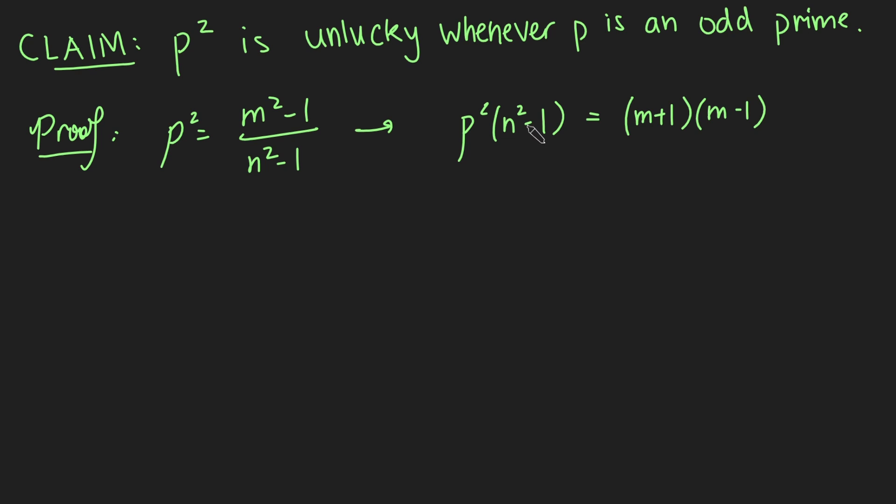Now, clearly the left-hand side here is just the product of these numbers, and in particular it's going to be a multiple of p squared. So it's a multiple of p, and so therefore one of these numbers here must be a multiple of p. Because p is a prime, it can't be broken down any further, so one of them must be a multiple of p.